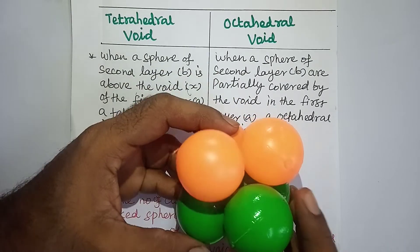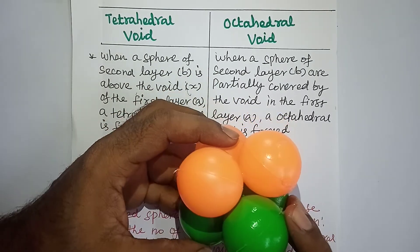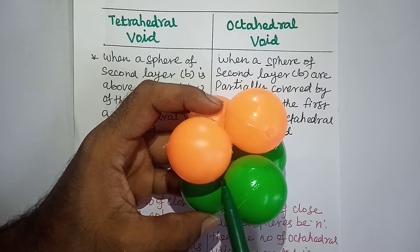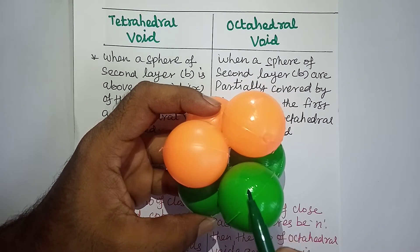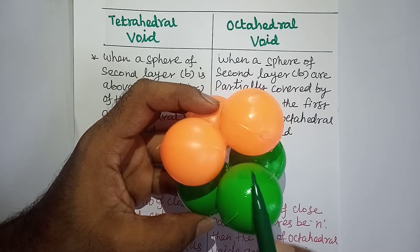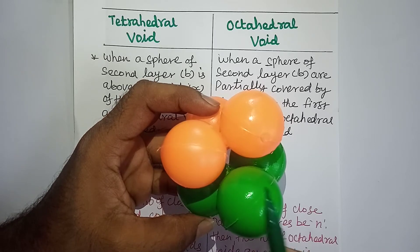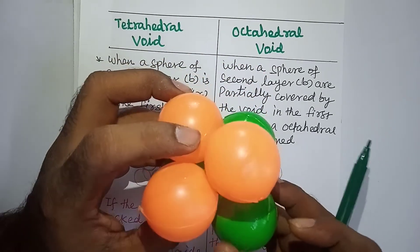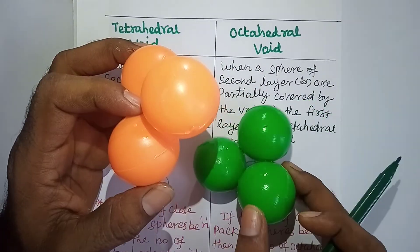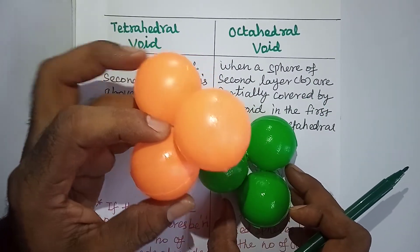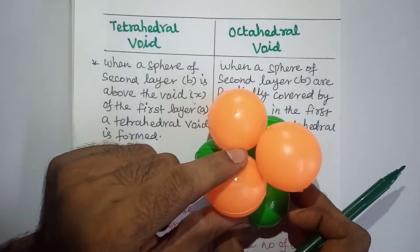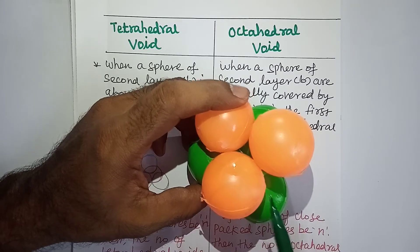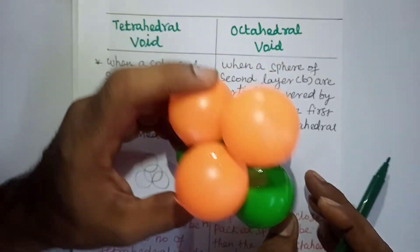There is some gap or free space between these two layers. This type of void is called an octahedral void. So octahedral voids are the empty or free space which is present between six atoms — three spheres in one layer and three spheres in the upper layer. There is some gap between these six atoms, and it is called an octahedral void.